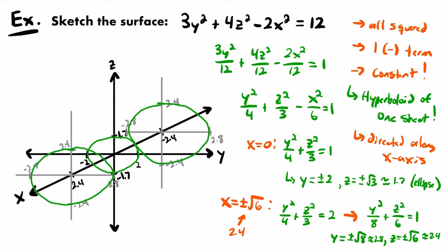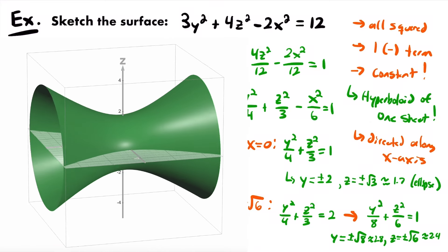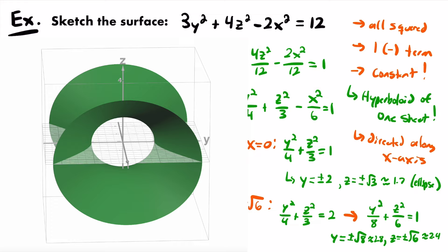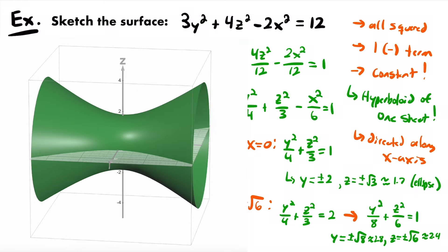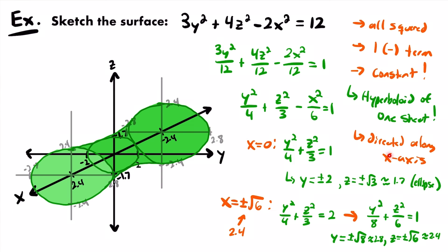To complete the sketch of the hyperboloid of 1 sheet, draw hyperbolic curves connecting these ellipses on both sides. After shading it in, that is our sketch of this hyperboloid of 1 sheet. Here's the 3D render — you can see the hyperboloid is directed along the x-axis, just as we said it would be.